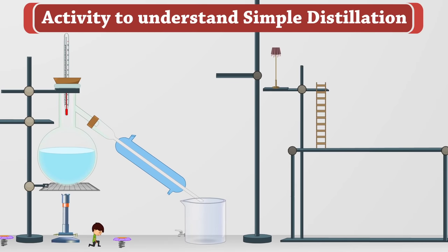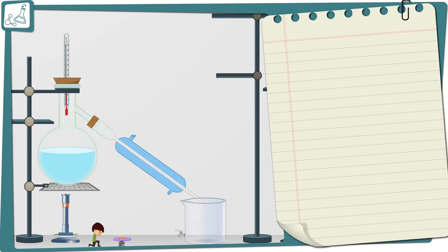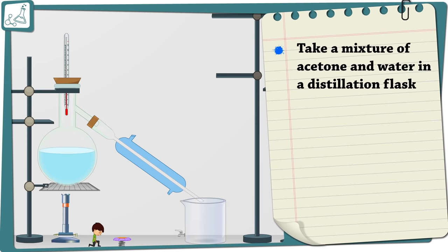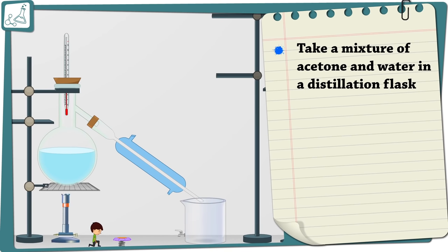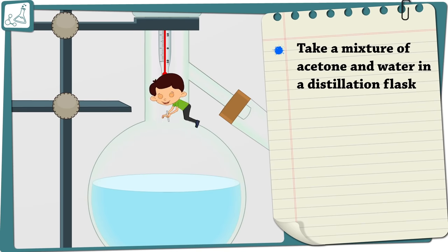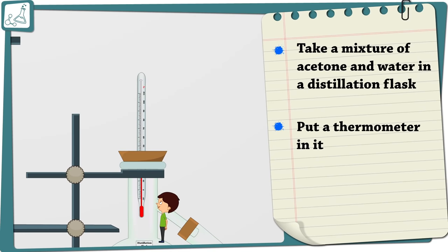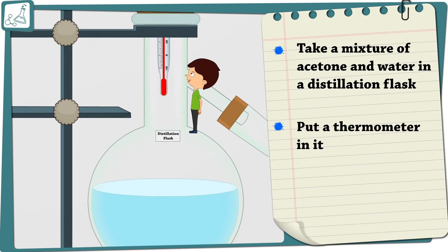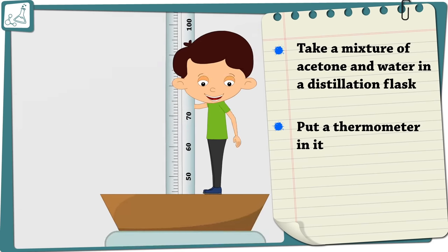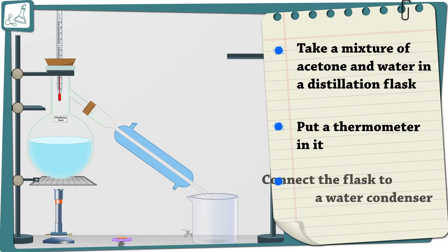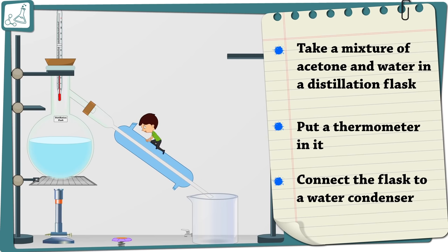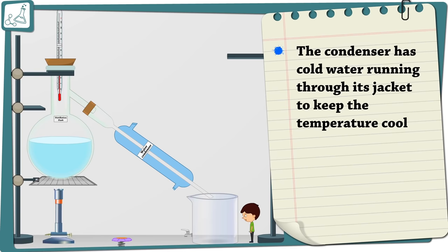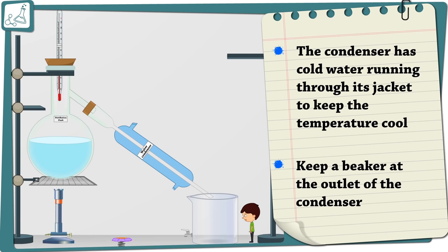Let us perform an activity to understand simple distillation. Take a mixture of acetone and water in a distillation flask. Put a thermometer in it. Connect the flask to a water condenser. The condenser has cold water running through its jacket to keep the temperature cool. Keep a beaker at the outlet of the condenser.